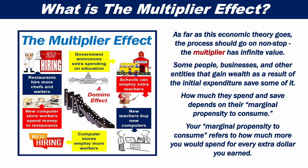As far as this economic theory goes, the process should go on non-stop — the multiplier has infinite value. Some people, businesses, and other entities that gain wealth as a result of the initial expenditure save some of it. How much they spend and save depends on their marginal propensity to consume. Your marginal propensity to consume refers to how much more you would spend for every dollar you earned.